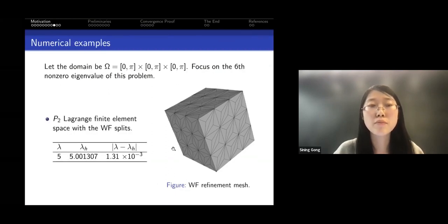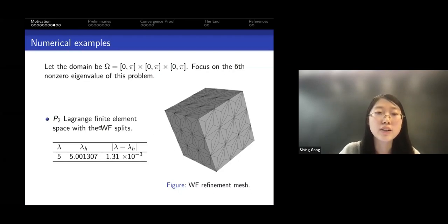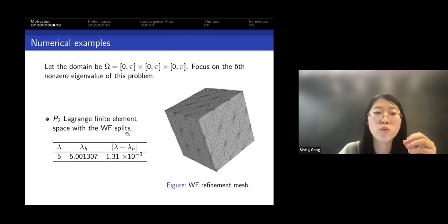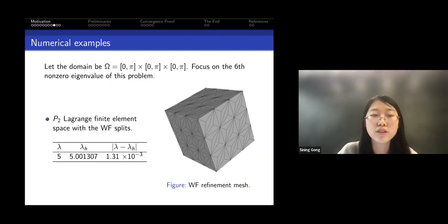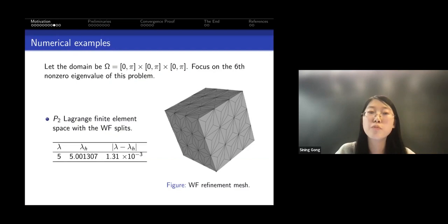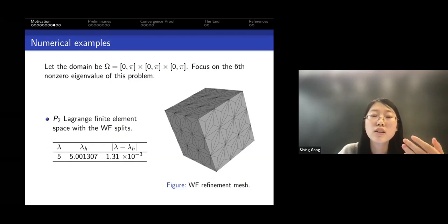In our numerical experiments, on certain eigenvalues using quadratic Lagrange finite elements on Worsey-Farin splits, we get a result of 5.001307 and the error is significantly small. If you refine the mesh you get even better results. Numerically this method looks convergent, but these are only numerical results.